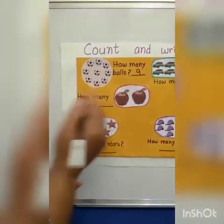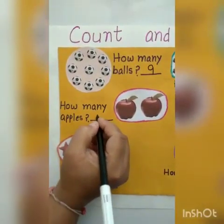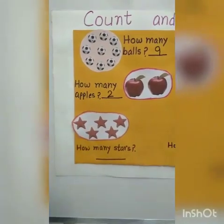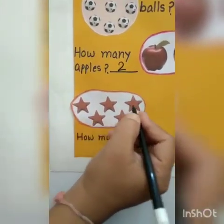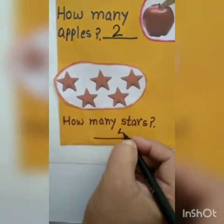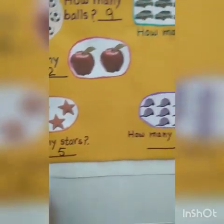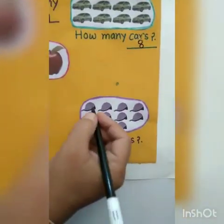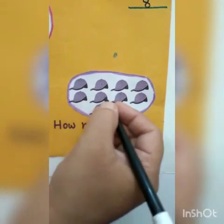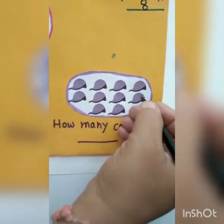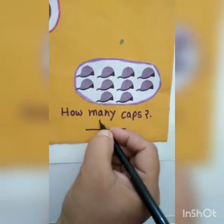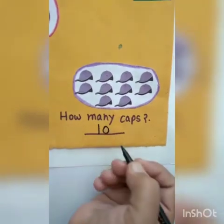How many apples? 1, 2. So we will write 2 — 2 apples. How many stars? 1, 2, 3, 4 and 5. So we will write here 5. Very good. Now how many caps? 1, 2, 3, 4, 5, 6, 7, 8, 9 and 10. 10 caps. So we will write here 10.